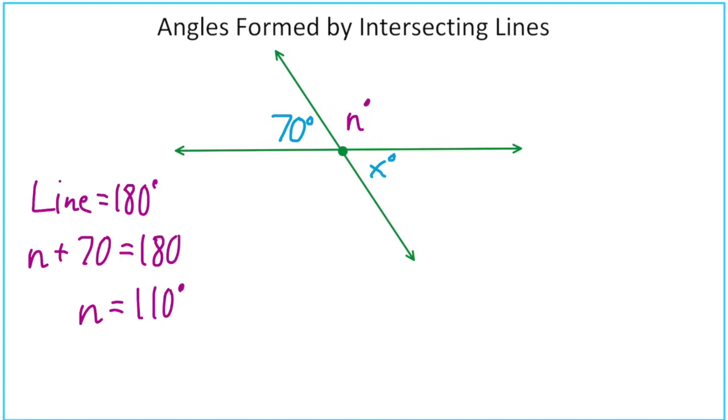Let's go ahead and replace that n with the 110. And now we can use that 110 degree angle and the x, and use line equals 180 to write an equation of 110 plus x equals 180. And we solve for x and we get 70 degrees, which might have made sense right from the start when you just look at the diagram.